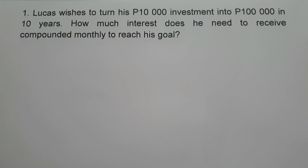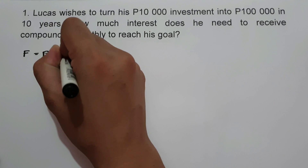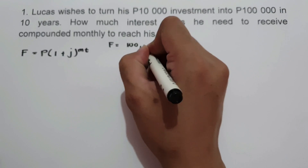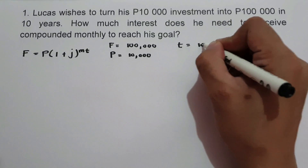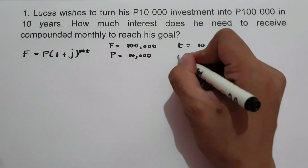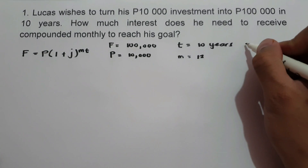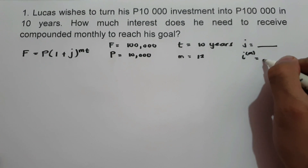On the first example, Lucas wishes to turn his P10,000 investment into P100,000 in 10 years. How much interest does he need to receive compounded monthly to reach his goal? To find the interest rate, we use the formula F equals P times the quantity of 1 plus J raised to M times T. Here F is 100,000, P is 10,000, M is 12 since it is compounded monthly, and we are looking for J, the interest rate per conversion period, and the nominal rate.